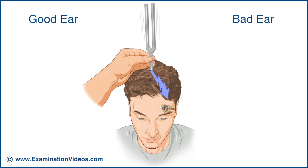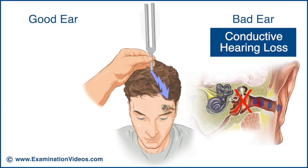If the patient reports the sound being heard louder in the bad ear, this suggests conductive hearing loss in that ear. This is because air conduction in the bad ear is blocked, making it less subject to environmental noise and more sensitive to sound transmitted through the bones of the skull.